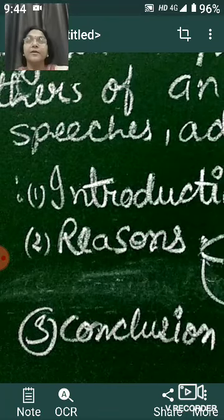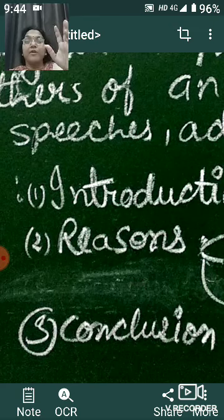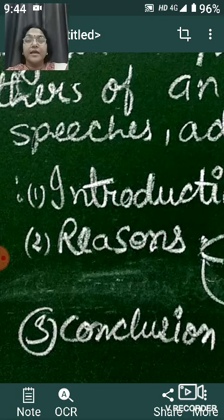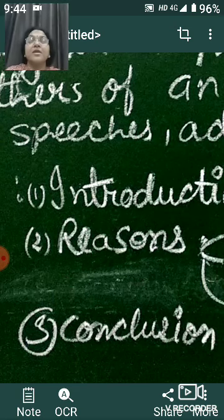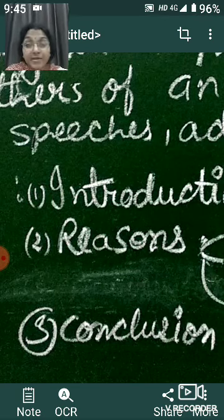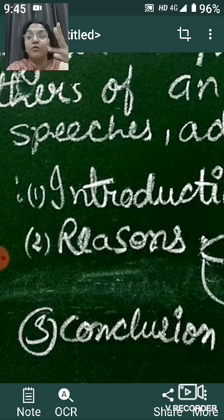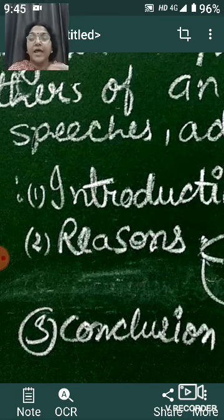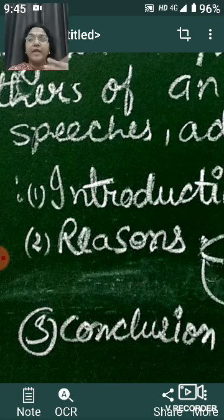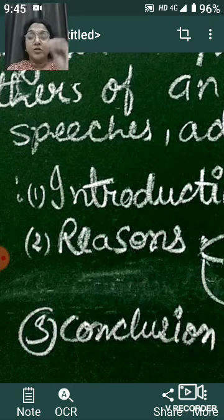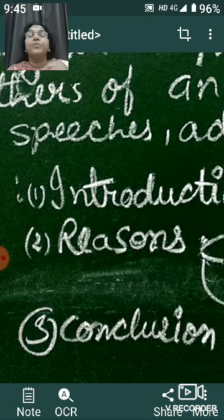Just like when we write an essay, we give the introduction, then we give the body where we write the merits, demerits, or drawbacks of a particular thing, and then we jump to the conclusion. In speeches also, we give our introduction, then the body of the topic, and then conclude. Similarly in your presentations, you introduce yourself, speak about the topic, and conclude with a thank you. In the same manner, persuasive writing also consists of three elements: introduction, reason, and conclusion.